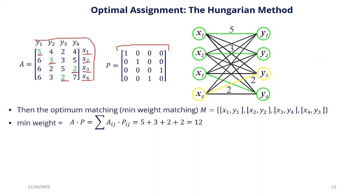These are the edges we need to select for the optimal matching. To calculate the minimum weights, we multiply the A' matrix with the permutation matrix P using dot product: 5×1 + 3×1 + 2×1 + 2×1. Working through the full dot product — 5 times 1 plus 4 times 0 plus 2 times 0 plus 4 times 0, and so on — we get a result of 12. That is the minimum weight matching and the optimal assignment.